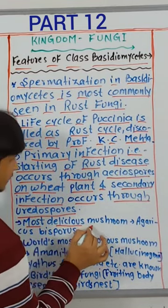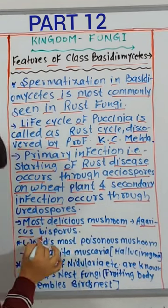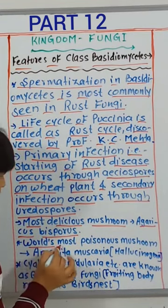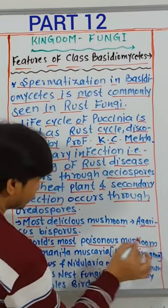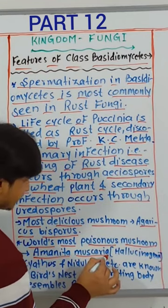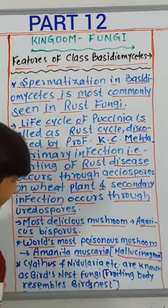The most delicious mushroom is Agaricus bisporus. The world's most poisonous mushroom is Amanita muscaria, which is also hallucinogenic.